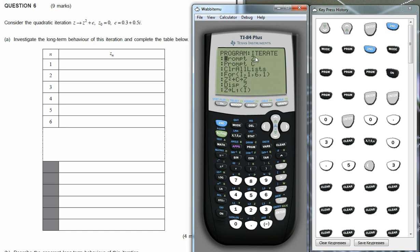It prompts for the value of z, so this is the initial value of z, and it also prompts for the constant c. So I've set this up in such a way that we can both change the initial value of z and the constant value there. So for this particular case, we've just put in z equals zero, and c equals 0.3 plus 0.5i.